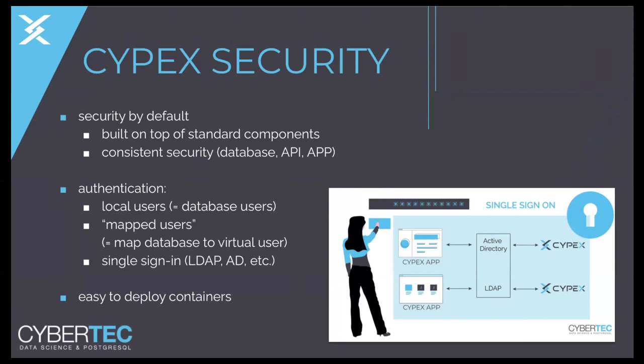The next thing people approach is security, which is certainly important especially in times of data protection laws, GDPR, and the POPIA Act in South Africa. What we try to do is make a tool that is secure by default, building on top of standard components that don't reinvent the wheel. We have a consistent security model across the application. Security begins on the database level: we set database permissions, which automatically creates a secure API because we only expose what's actually visible on the database side. The application is secure because it talks to this API that only exposes what you're allowed to see. There's no chance for the client to get anything wrong, because it's not visible on the API side anyway.